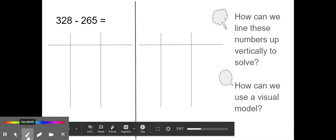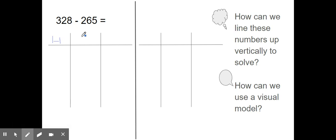Let's practice one more problem together. 328 minus 265. This time, let's start with a place value chart first. You can do it on your paper while we do it together here. 328. How many hundreds are there? 3. So let's draw three hundreds. 1, 2, 3.